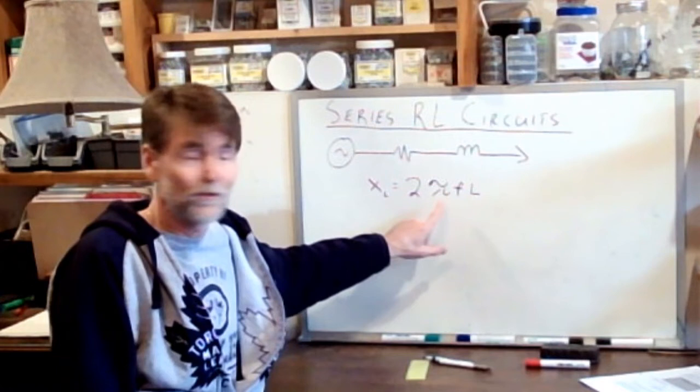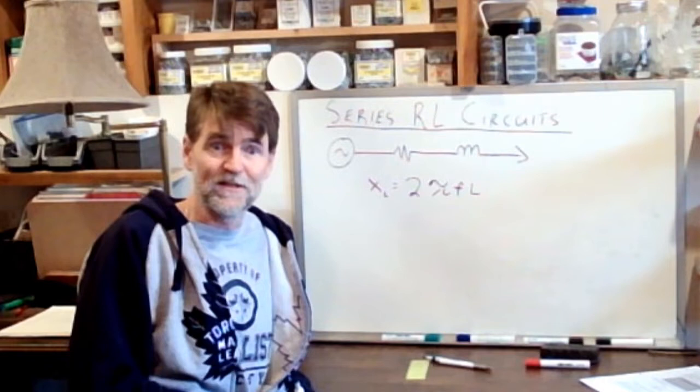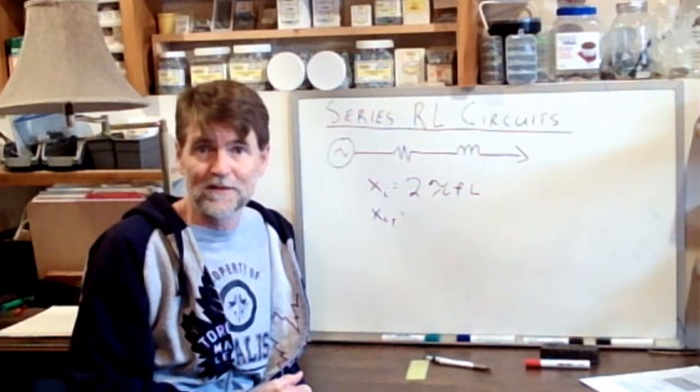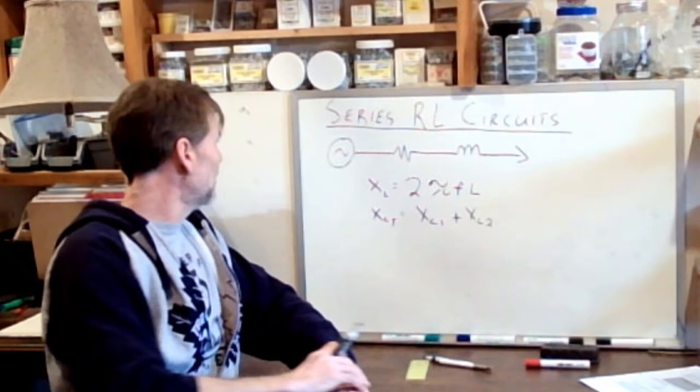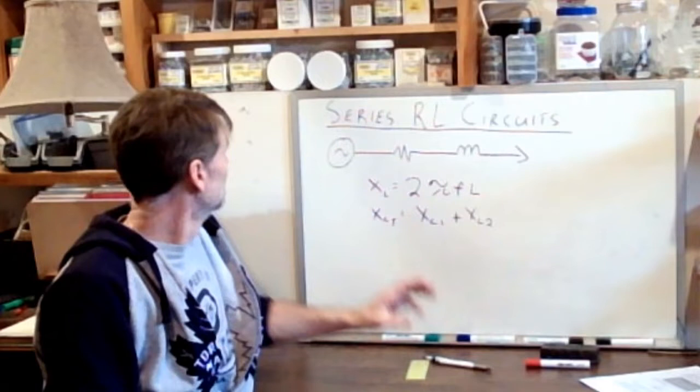So there's our first equation, XL equals 2πFL. The next equation I want to throw out here is what if we had multiple inductors, multiple coils connected in series? How would you add them up to get your total inductive reactance? So the inductive reactance total is just like adding up resistances that are connected in series, you just add them up. So it's XL of the first inductor plus XL of the second inductor, etc. So there's a couple of equations, just a little bit of review from a week ago. It's been almost two weeks now. Actually, I suppose it has been two weeks. So that's why I thought it would be a good idea to start with the review.